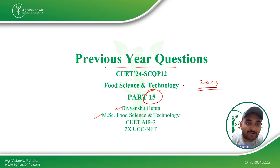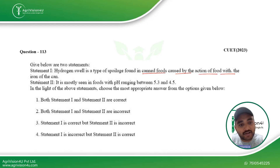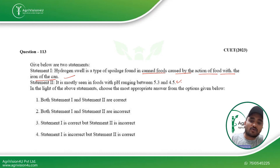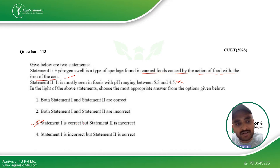Going straight to the first question: hydrogen swell is a type of spoilage found in canned foods, caused by the action of food with the iron of the can — yes, that is correct. Then it is mostly seen in foods with pH ranging between 5.3 and 4.5 — no, that is wrong. So Statement 1 is correct but Statement 2 is incorrect, making the third option the right answer.